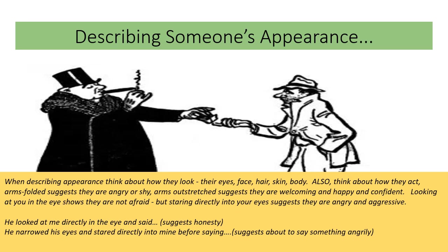What are their eyes doing? If they're looking at the ground and not looking at you in the eye, that shows they're nervous. If they're looking you straight in the eye, that shows they feel honest and confident. 'He looked at me directly in the eye and said,' suggests honesty. 'He narrowed his eyes and stared directly into mine before saying,' is very different — that suggests the person is angry. How you describe small things like the way they stand or the way their eyes are tells the reader a lot about the people you're describing.